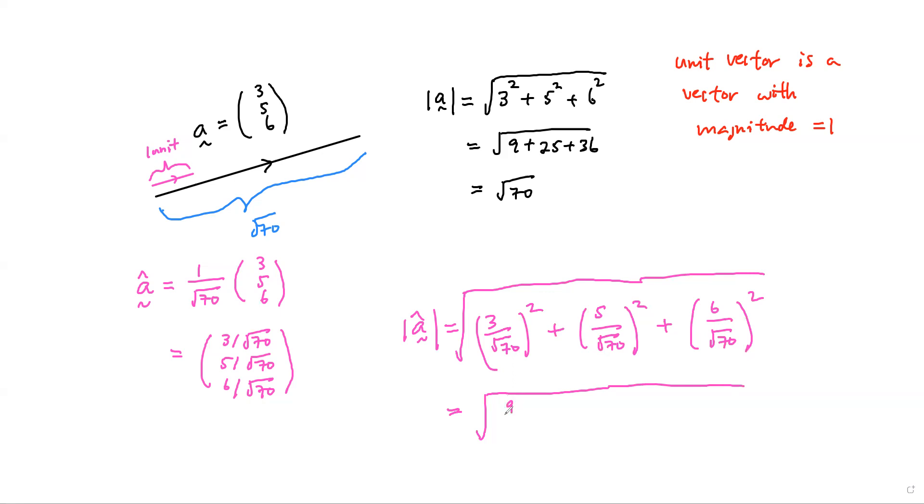That gives us 9 over 70 plus 25 over 70 plus 36 over 70. And you realize that we will get square root of 1 which is 1. So that's what we're looking for. This is indeed a unit vector of a, and this is how we calculate unit vector.